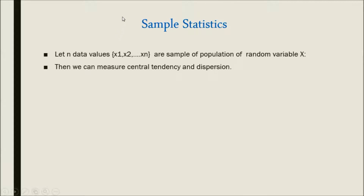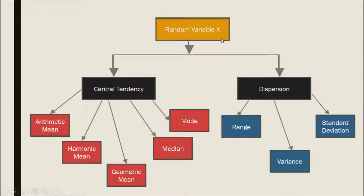Suppose we have n data values like x1, x2, ..., xn as a sample of a population of random variable x. We want to measure some statistical things like central tendency or dispersion. Under central tendency we have arithmetic mean, harmonic mean, geometric mean, median, and mode. In case of dispersion we have range, variance, standard deviation, and so on.